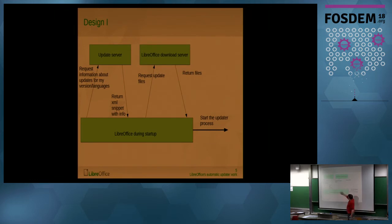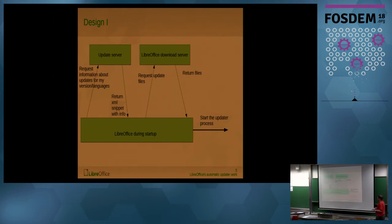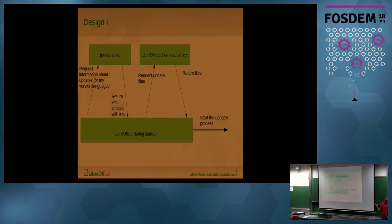In a second step, we then ask the LibreOffice download server — or in the future, most likely our mirror network — for the download file and download these files. That's basically the point when the LibreOffice process is done and hands over to the updater process, which uses our update files to generate a new LibreOffice.